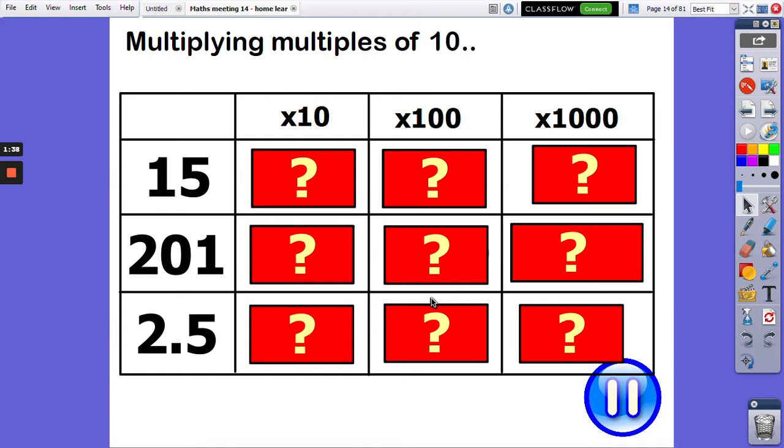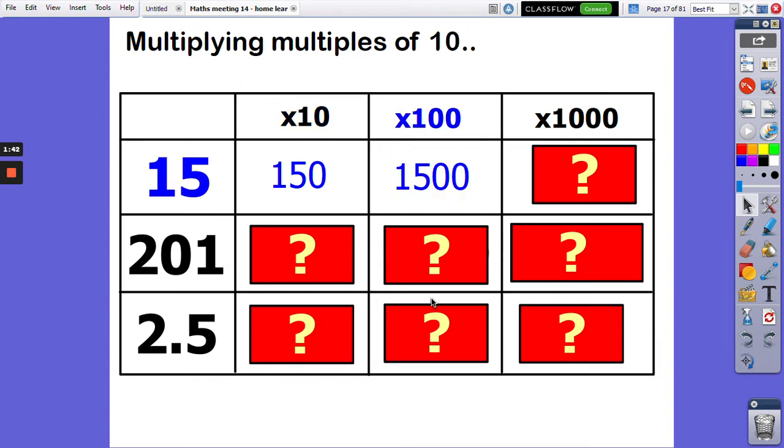Okay, let's see how we did, shall we? We'll start with 15 times 10: 150. 15 times 100: 1500. 15 times 1000: 15,000. Well done if you've got those three.